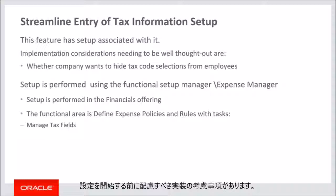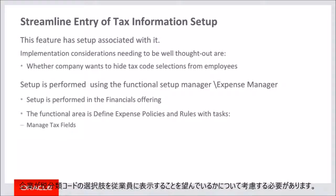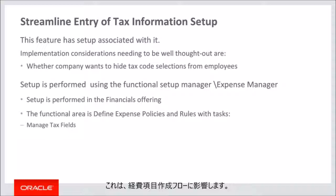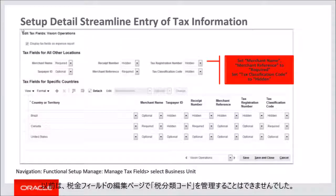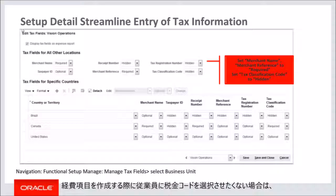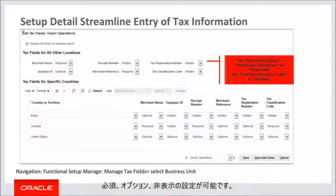Before commencing setup for streamline entry of tax information, implementers must consider whether the company wants to hide the tax classification code selections from their employees, as this will impact the expense item creation flow. If tax classification code is set up to be hidden, employees will not see the tax classification code field during expense item creation. You set the feature up by accessing the Functional Setup Manager and navigating to Manage Tax Fields. On the Edit Tax Field page, implementers can select the value 'hidden' for tax classification code if they don't want employees to have the ability to select tax codes when creating expense items. All available values are: required, optional, or hidden.